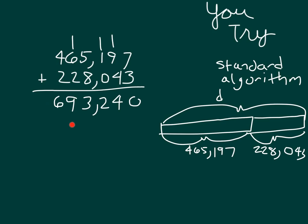So my sum there, I write it over into my tape diagram. And let's read the whole problem again. Four hundred sixty-five thousand one hundred ninety-seven, plus two hundred twenty-eight thousand forty-three, equals six hundred ninety-three thousand two hundred forty.